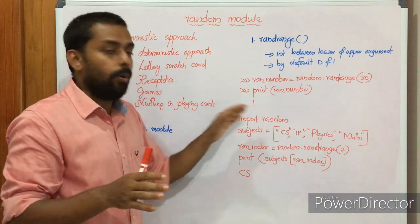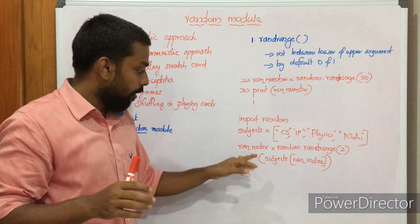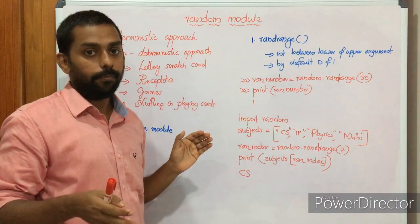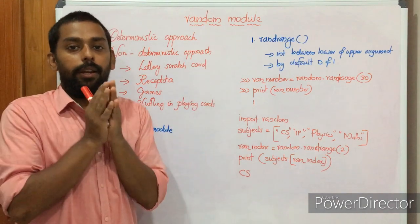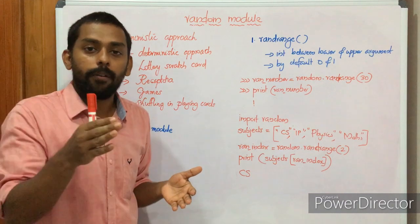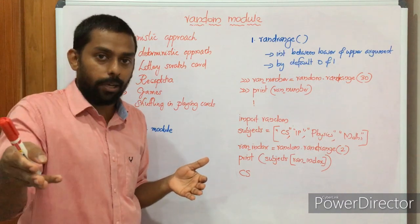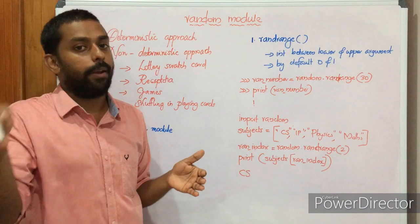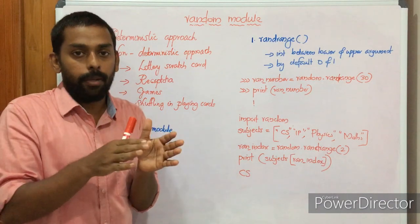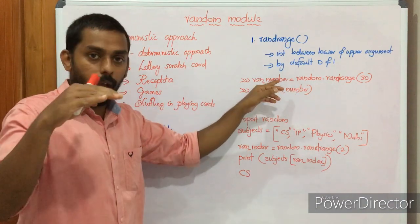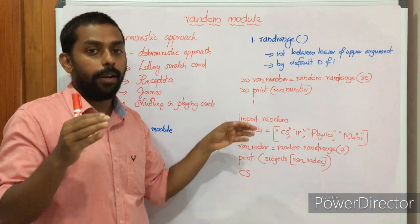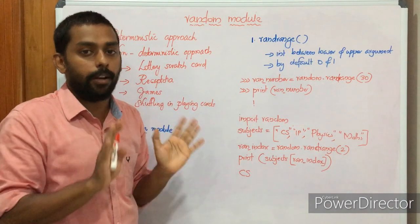So this is how the randrange function works. It returns an integer value between the lower argument and upper argument. The upper limit is excluded, so values range from 0 to N minus 1. By default the lower limit is 0 and upper limit is 1. We must import the random module first before applying randrange, since it is a function available in that module.